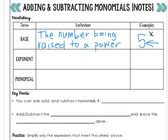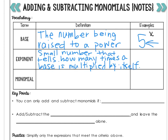The exponent is the small number that tells you how many times the base should be multiplied by itself. So for example, if I have x to the 5th power, that little number tells me that I'm going to multiply x by itself 5 times: x times x times x times x times x.